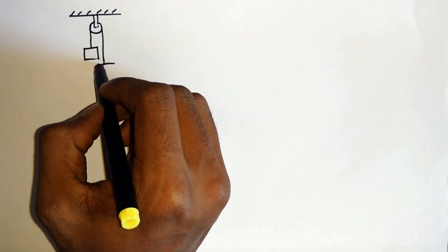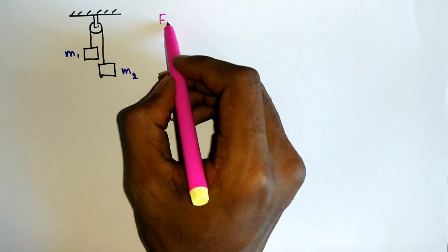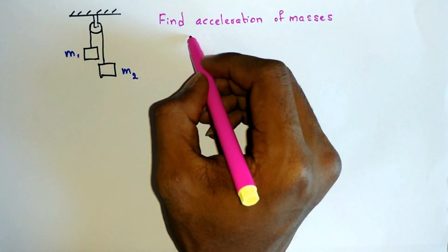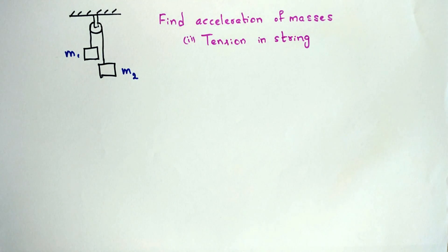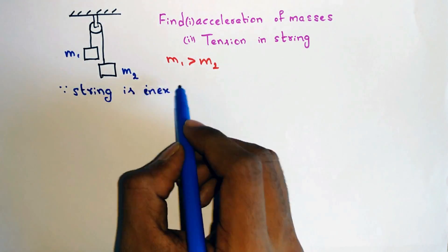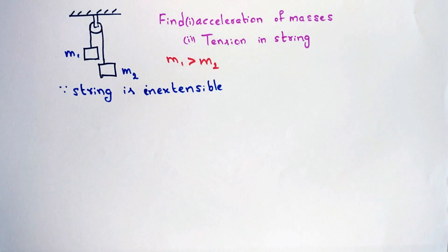Now let's do an example problem. Here there are two masses m1 and m2 hanging over a pulley. And we need to find the acceleration of masses and the tension in the string. So let's take m1 is greater than m2. Assume that the string is inextensible. Then if one mass moves up then the other has to move down by the same amount. Thus both of these masses will have same acceleration but in opposite direction.